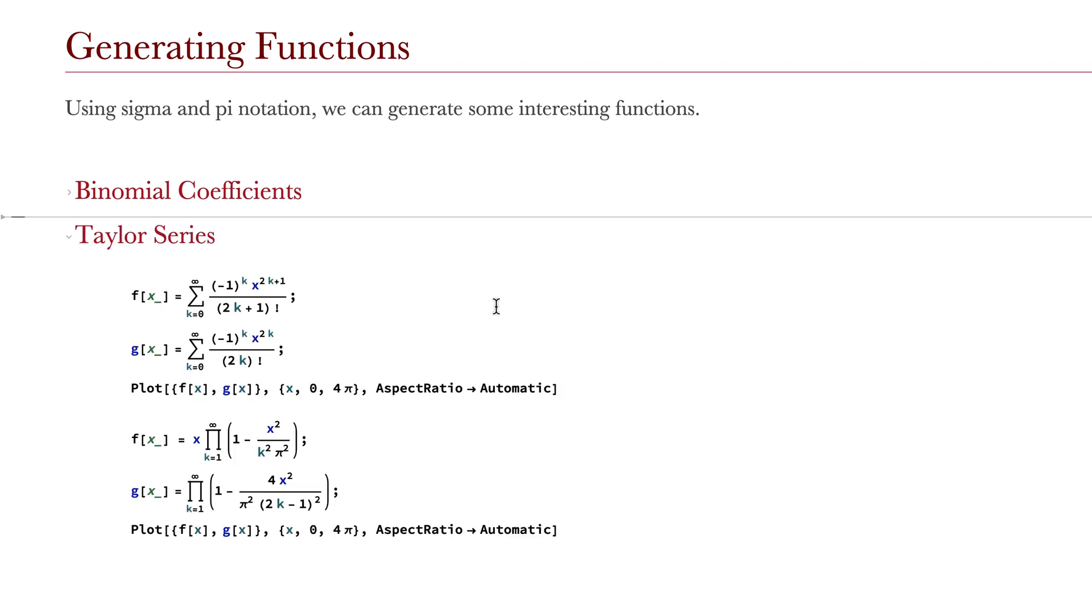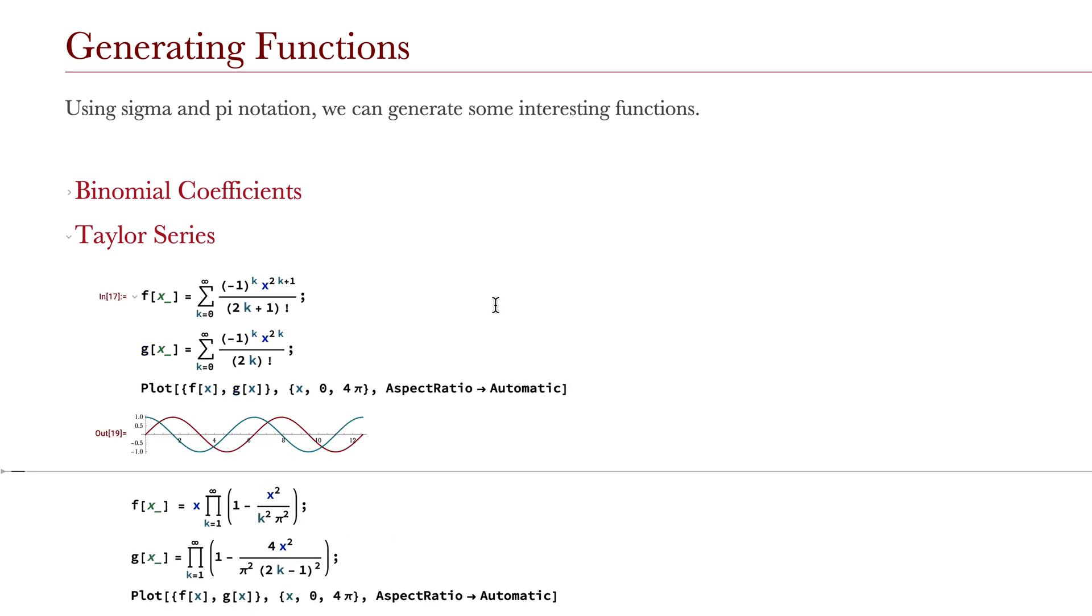Along with that, we can use infinite sums to generate functions known as Taylor series. Here, we use sigma notation to write out two fairly famous infinite Taylor polynomials, which come out to be the same as sine and cosine of x.